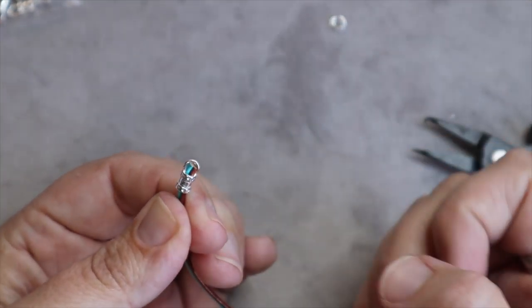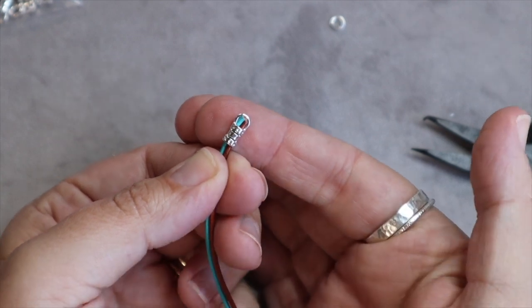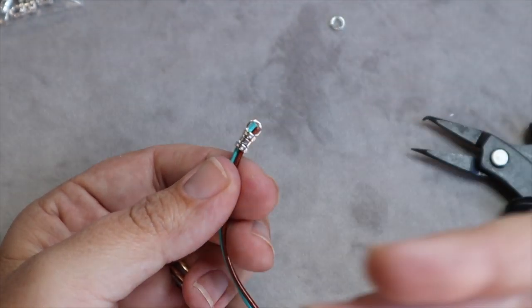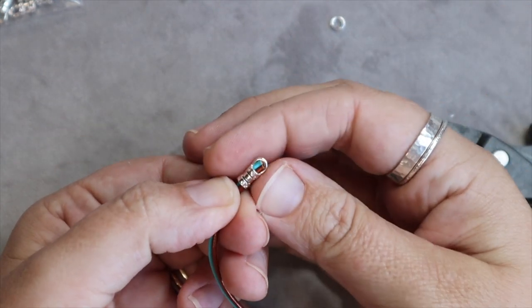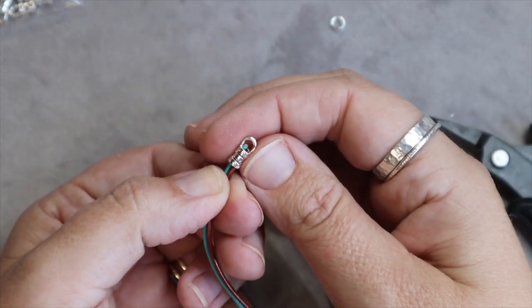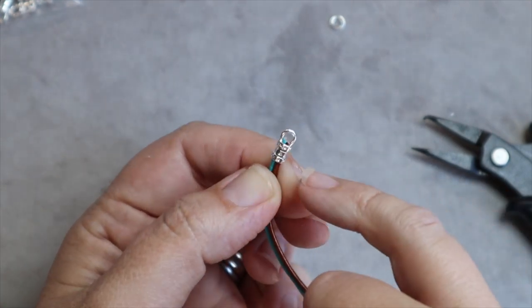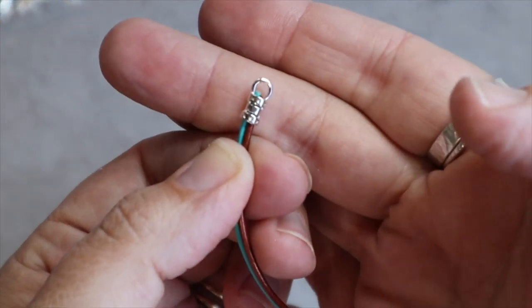Now if you slide them all the way up like this, it's going to cover up the hole that you have there to actually put your clasp or whatever you're going to do into it. So you want to pull it just to where you can see the leather poking out the top hole here.